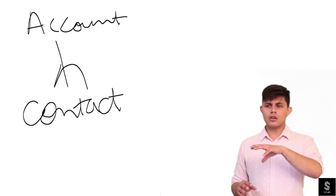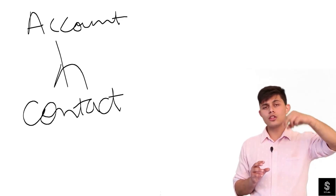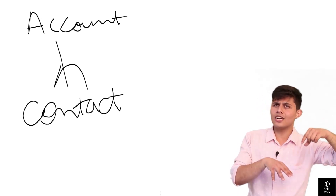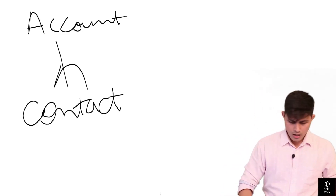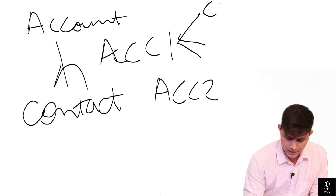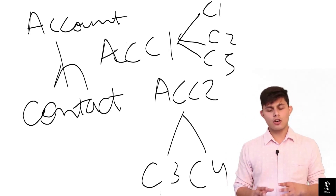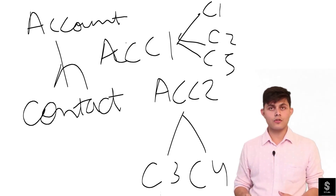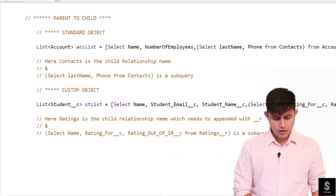For example, you want to fetch 10 Account records and also all the associated child records of those parent records. So with those 10 Account records, you're fetching the Contact object records related to each account. If there are two accounts — acc1 and acc2 — where acc1 has three contacts: c1, c2, and c5, and acc2 has two contacts: c3 and c4, we fetch acc1 and acc2 along with all those contact records as part of a single query.